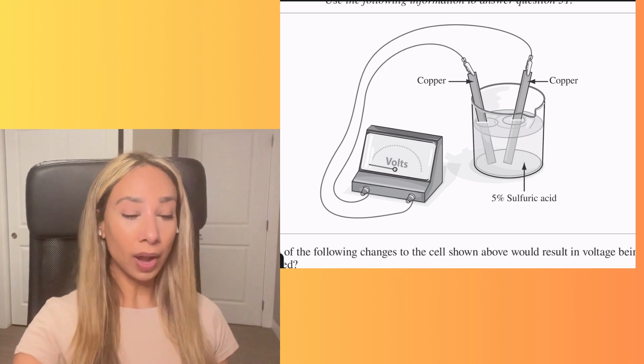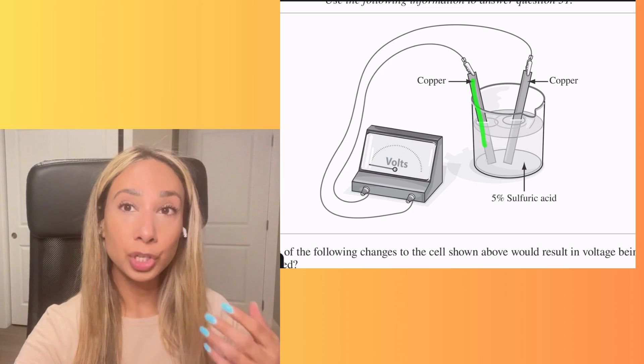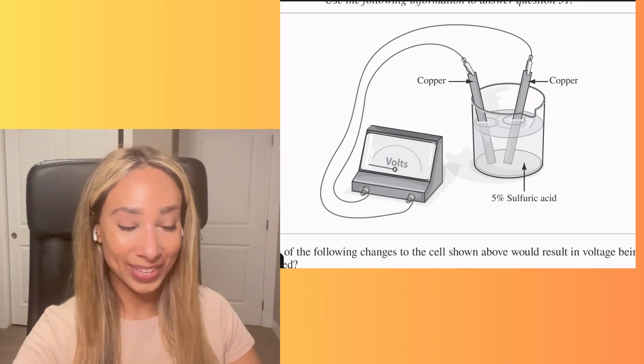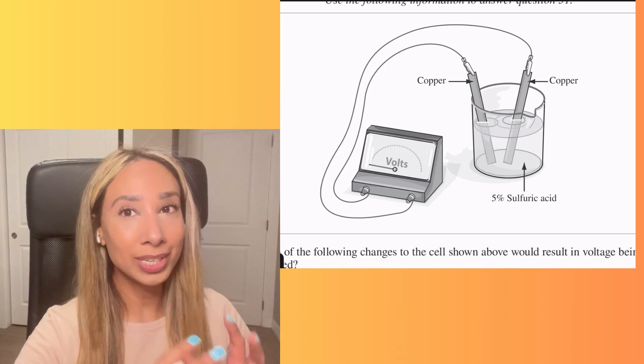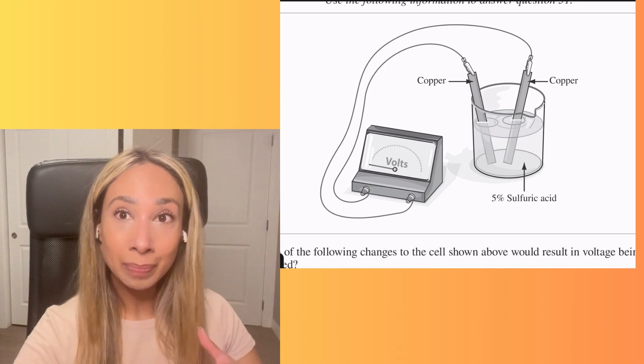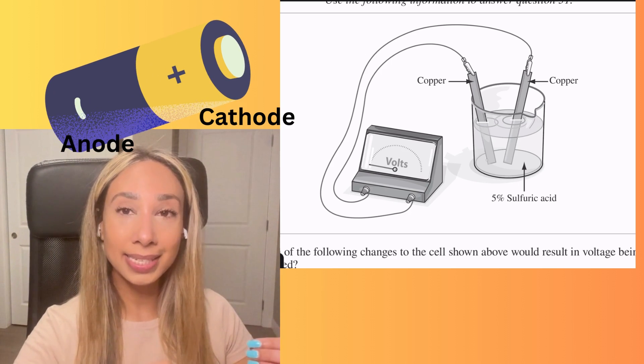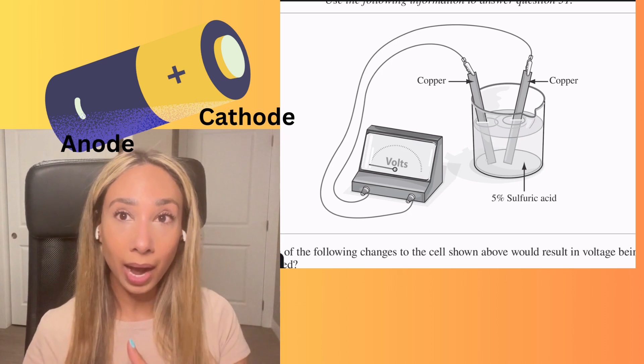But essentially we've got our electrodes, which are the metals that are going to help generate a current. So there's a lot more chemistry involved in this. I'm just going to give you the simple one. Basically, we are creating a battery really similar to the battery you might have had when you were kids. With those batteries you have a positive and a negative end and that's going to allow the electrons to flow through.